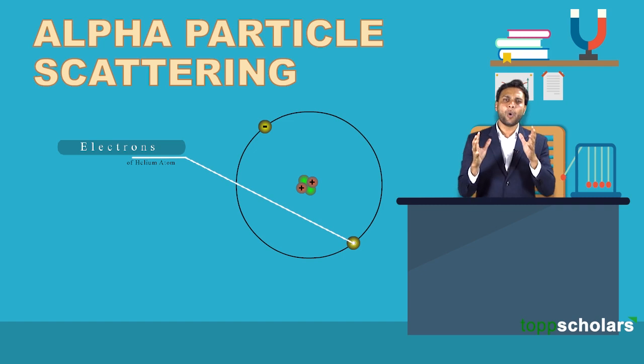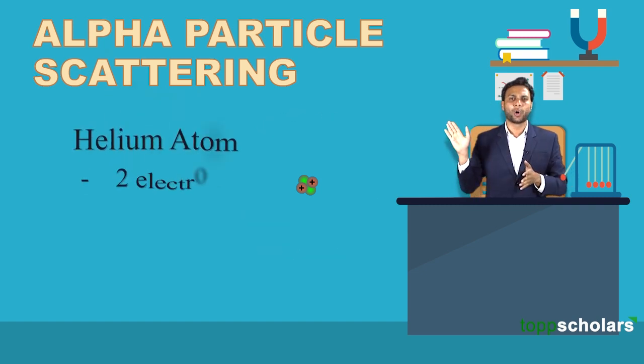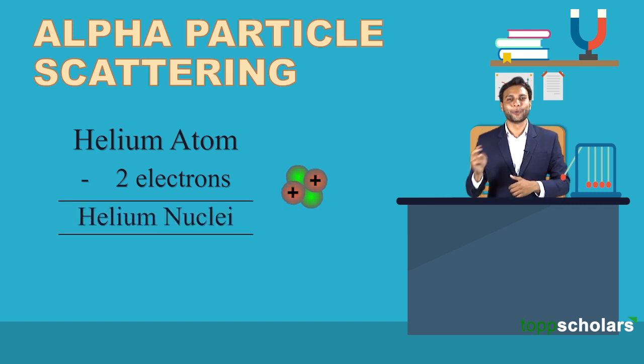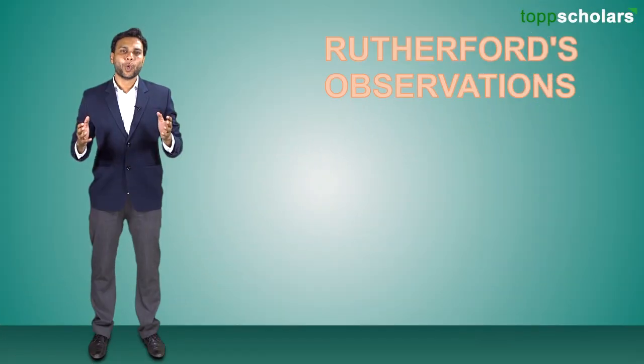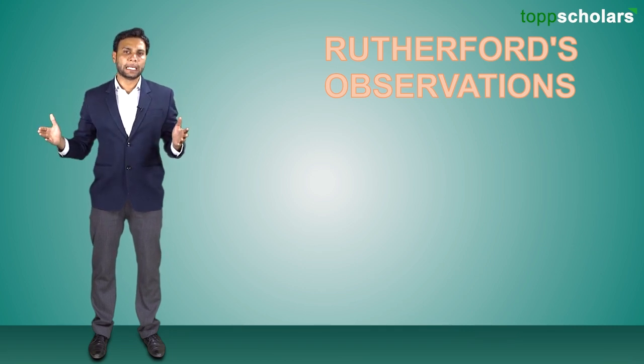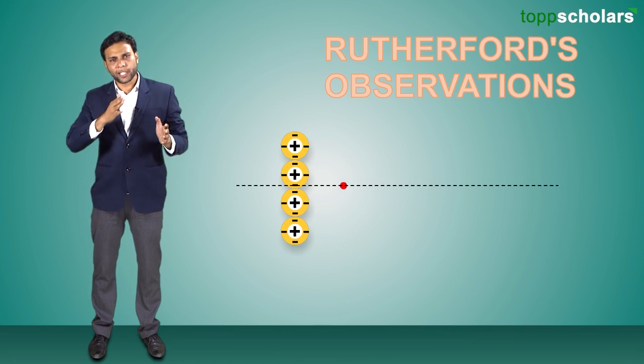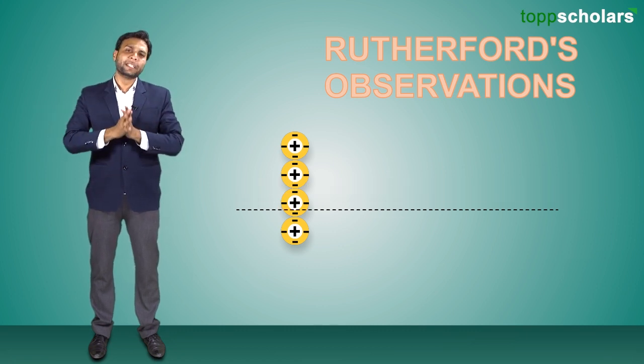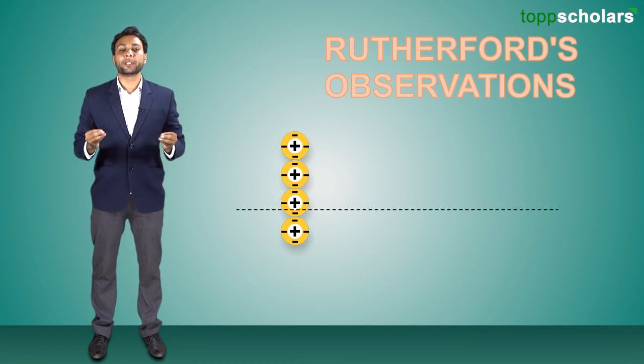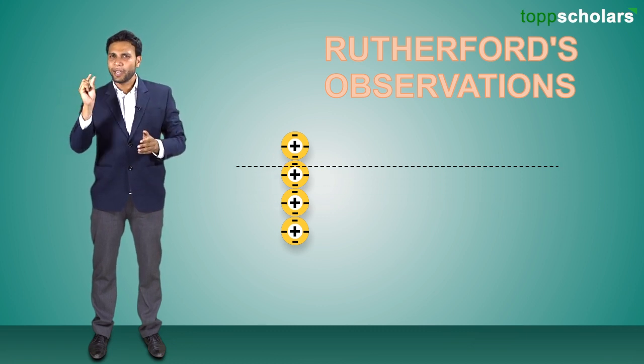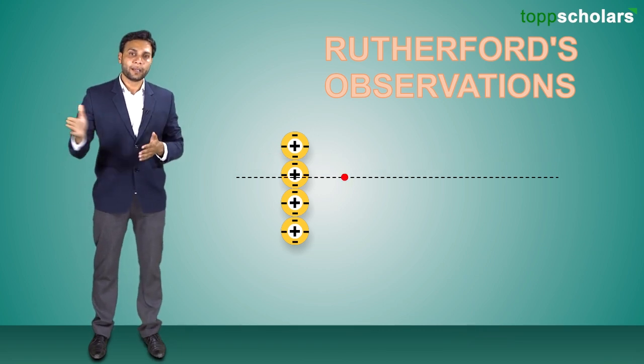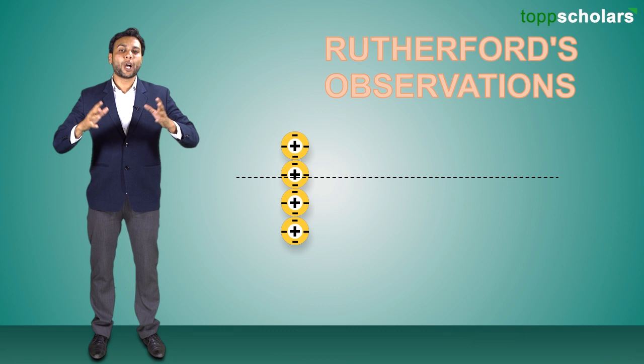Alpha particles are basically helium nuclei. A helium atom consists of two protons and two neutrons with two electrons revolving around. If you remove the two electrons, what remains is two protons and two neutrons. When alpha particles were bombarded on gold foil, 99% passed through. Of the remaining 1%, 0.9% got deflected by a very small angle, while 0.1% reflected back.